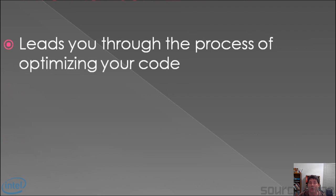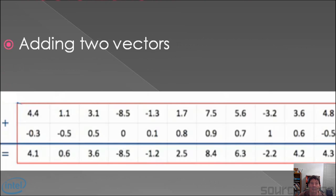We're going to be talking about Intel Advisor XC — that's the tool we're going to be using for vectorization; sometimes it's called Vectorization Advisor. This will lead you through the process of optimizing your code. Here we see an example where you could add two vectors. Notice there's a vector in the top row, another vector in the second row, and the resulting vector in the third row.